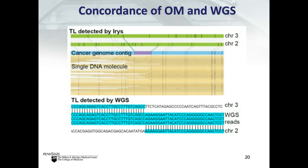In many cases there was concordance between optical mapping and whole genome sequencing. One example shows a translocation identified by both methods: on the left side of individual molecules they map to chromosome 3, while on the right they map to chromosome 2, indicating a fusion between chromosomes 3 and 2. Whole genome sequencing also yields reads spanning that junction between chromosome 3 and chromosome 2.